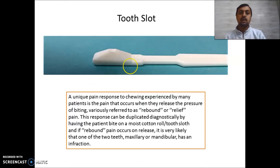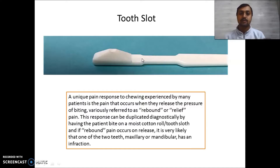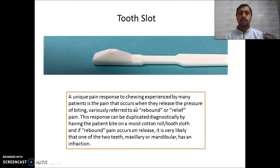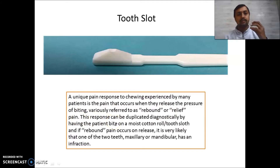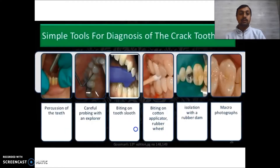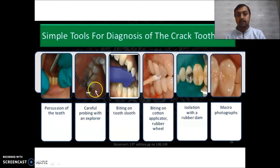Let us start with the first image: the tooth slooth. This is the tooth slooth, most often used for the diagnosis of cracked tooth syndrome — it is the ideal diagnostic tool. People with cracked tooth syndrome have a unique pain response known as rebound or relief pain, meaning they have pain when they release the pressure of biting. Other tools include percussion of teeth and careful probing with an explorer, where you can see the crack.